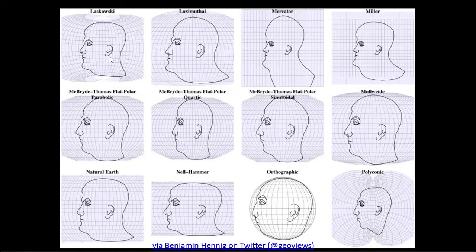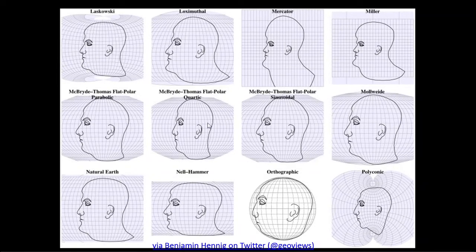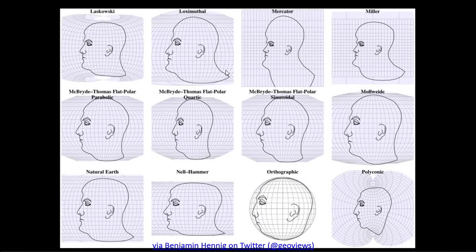Regarding projection: every map lies to you, especially global-level maps. It's impossible to take a round Earth and put it on a flat piece of paper without distorting something. There's always some distortion — illustrated here by showing how different map projections distort a round human head.